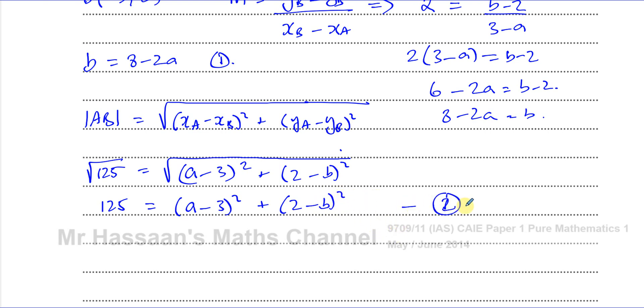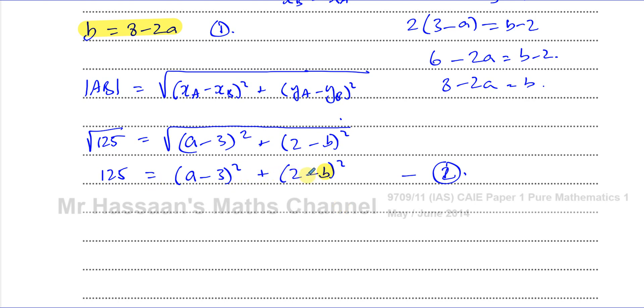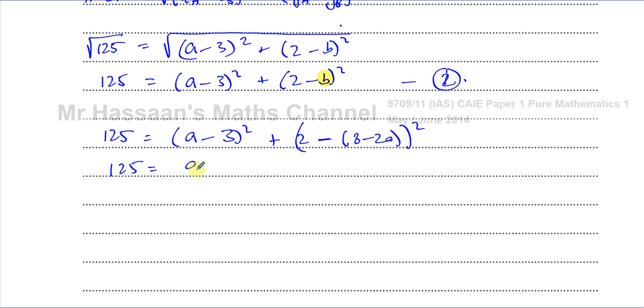Now I want to solve these two equations simultaneously. Before I start expanding, I can take equation 1 and substitute it into equation 2. I know b is 8 minus 2a, and I have b here. So if I replace the b with 8 minus 2a, I will have substituted this equation into that equation and eliminated the b from the equation. So I have 125 equals (a minus 3) squared plus (2 minus (8 minus 2a)) squared. Let me simplify this before I start expanding. So I have (a minus 3) squared plus (2 minus 8 plus 2a) squared, which is (2a minus 6) squared.